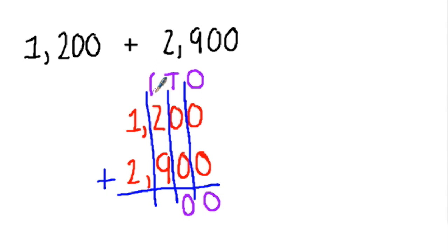On to the hundreds. Two hundreds plus nine hundreds. Ah, here's our challenge. We have eleven. But we can't get two digits in one place. We can only have nine at the most.